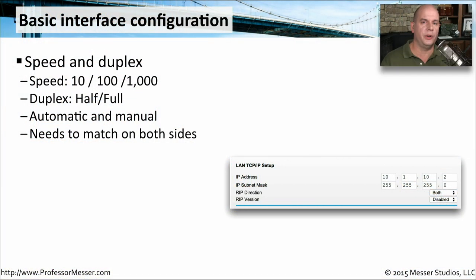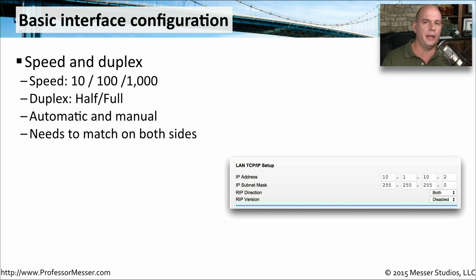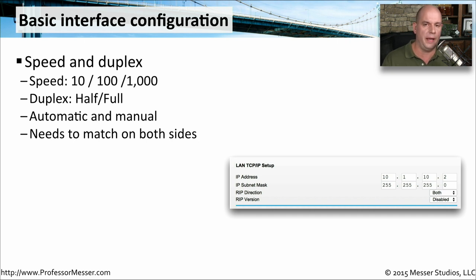When you're setting up a switch, there are a number of settings that you need to configure for the interfaces themselves. One is the speed of the interface — you generally would set it to something like 10 megabits, 100 megabits, or 1,000 megabits per second. You could also configure the duplex on each individual interface to be running at either half duplex or full duplex.